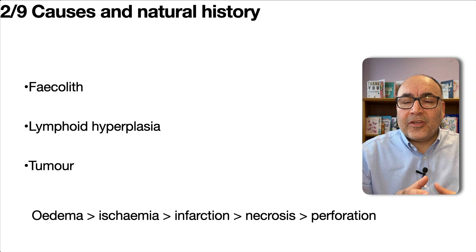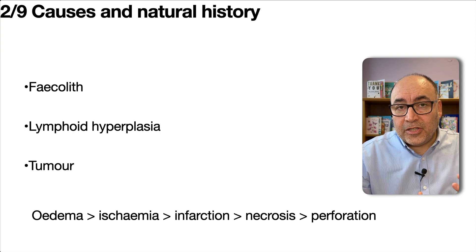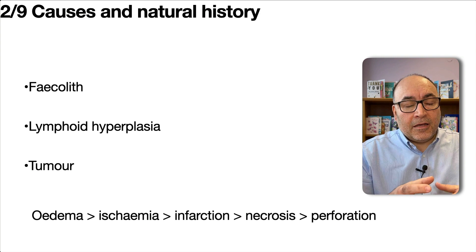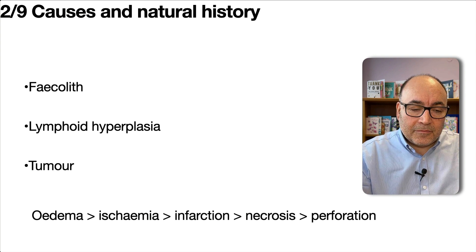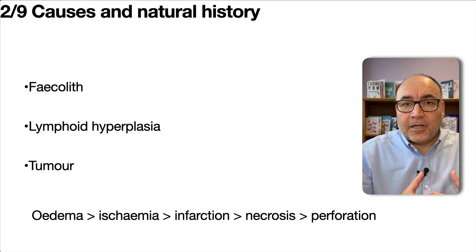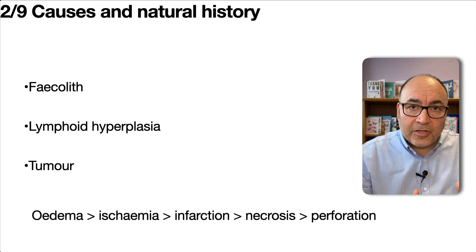The next fact covers the causes of appendicitis. There are many different causes but the commonest ones are usually a fecolith — a hardened piece of stool which can block the appendix outlet leading to oedema further along. You can also have lymphoid hyperplasia as a result of some infection or inflammatory process, or it can be blocked by a tumour in the terminal ileum or the caecum area.